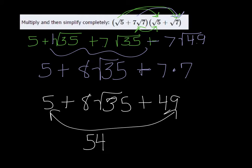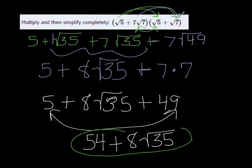54 plus 8 square root of 35. The square root of 35 doesn't simplify; the only factors are itself and 1, and 7 and 5, so we don't have to do anything else.